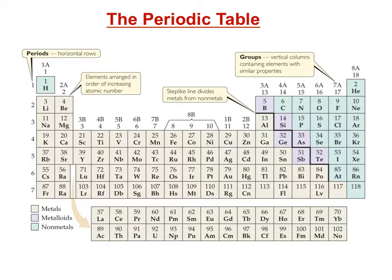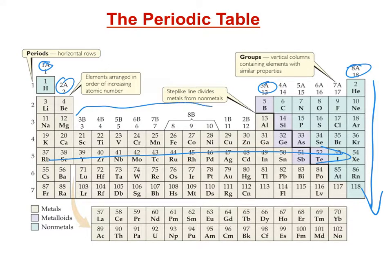The periodic table is organized into periods which run from left to right, and groups which move down the periodic table. Groups are elements with very similar properties. The group numbers are listed as 1a, 2a, 3a, all the way to 8a. In between you have 1b through 8b, which are the transition elements.